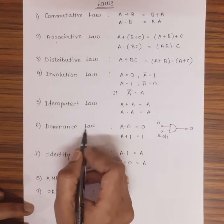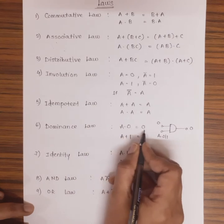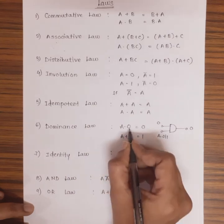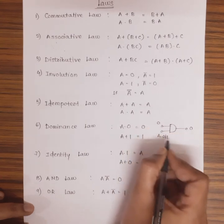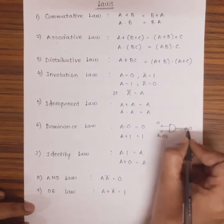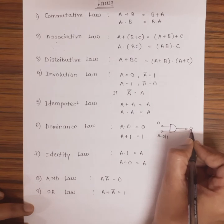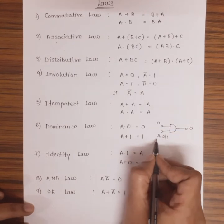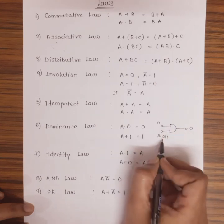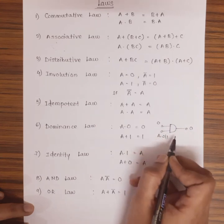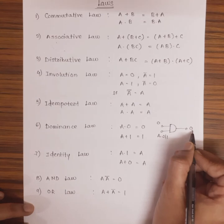Then coming to the dominance law: A · 0 = 0. It indicates that one of the terminals of the AND gate is connected to 0. Then irrespective of the another input, the output remains 0. If another input is 0, then 0 · 0 is 0. If another input is 1, then 0 · 1 also produces output 0.